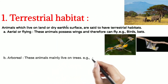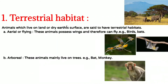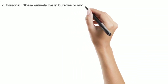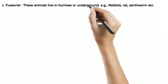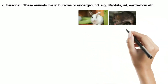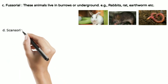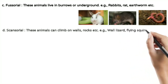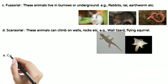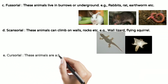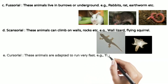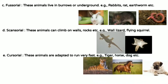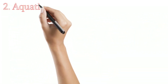Arboreal habitat refers to animals which live on trees, like certain birds and monkeys. Fossorial refers to animals which live underground, like earthworms. Scansorial animals can climb trees, walls, and rocks — like flying squirrels. Cursorial animals are adapted to run very fast — like tigers, horses, and dogs.